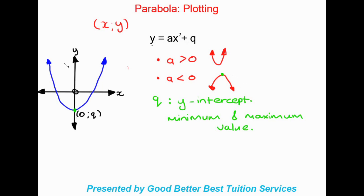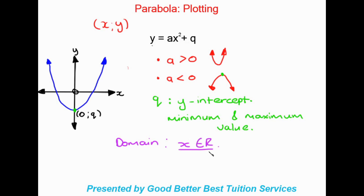When exam questions ask us for the domain of the graph, domain refers to x values. For a parabola, the answer will always be that x is an element of all real numbers, because a parabola goes on forever and x can be every single value on the graph — x is not limited in any way.